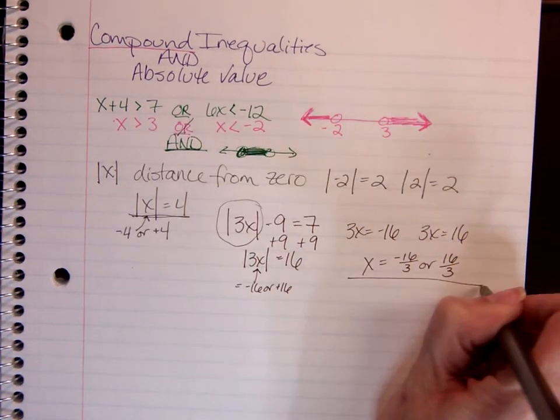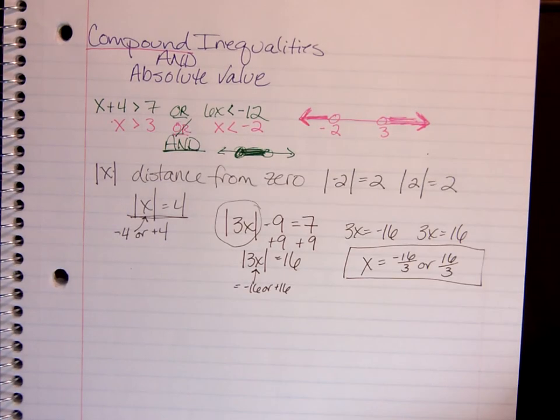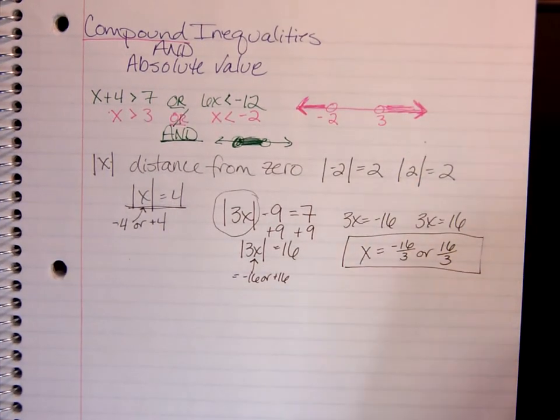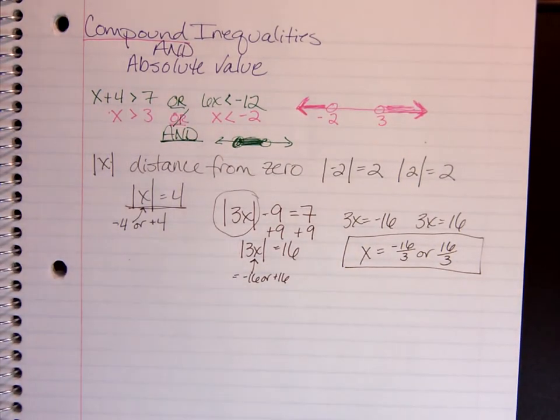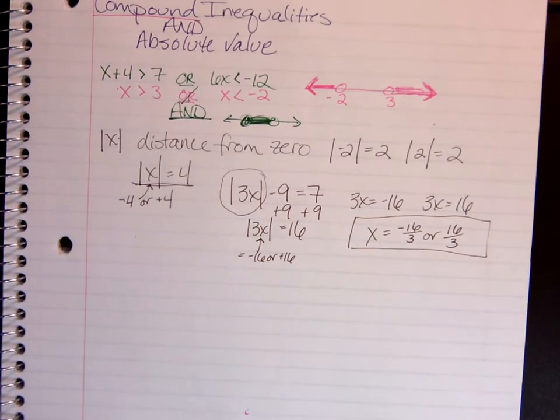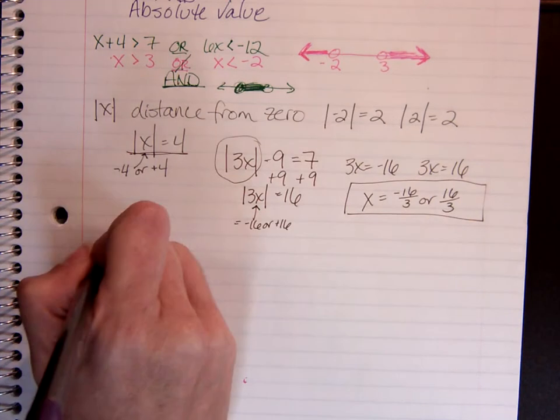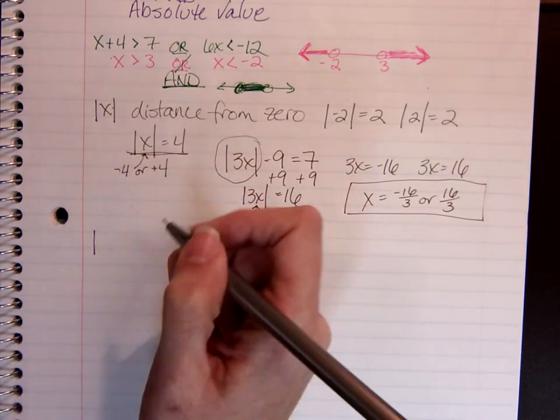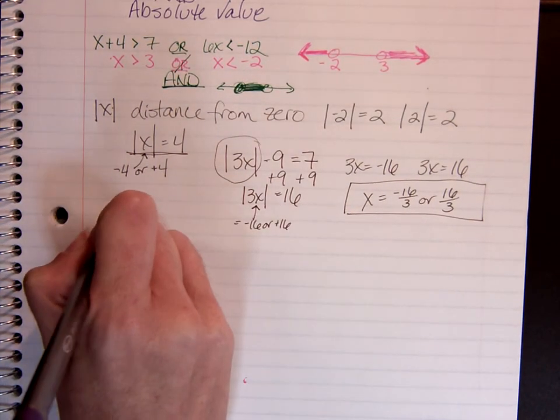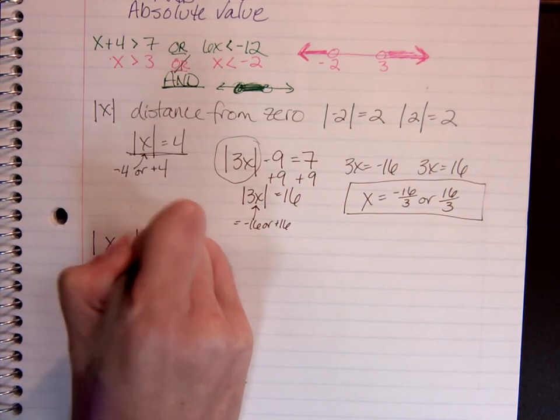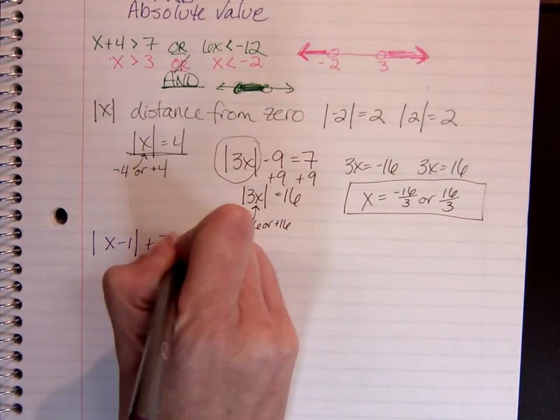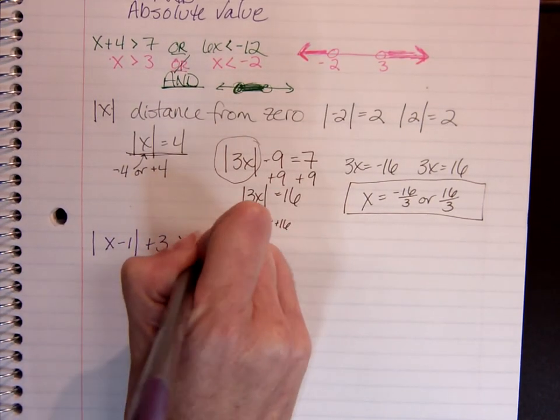That tells me that x could either be negative 16 thirds or positive 16 thirds. They're both going to work, and they'll both be okay. Super simple with equations. It changes a little bit when we get to inequalities.